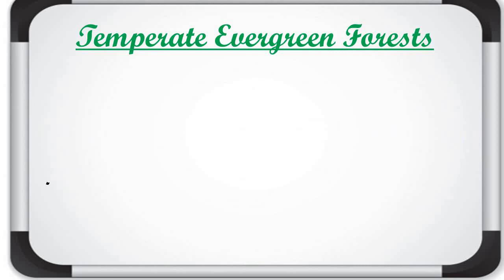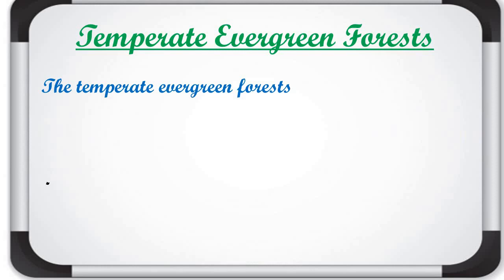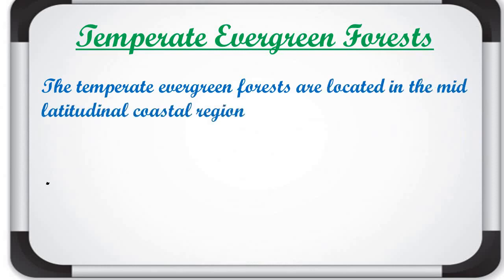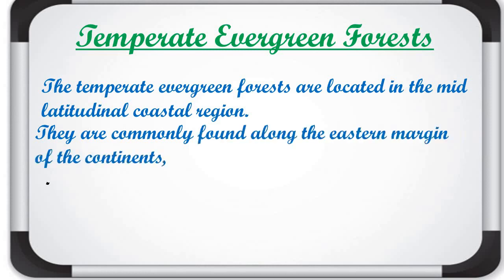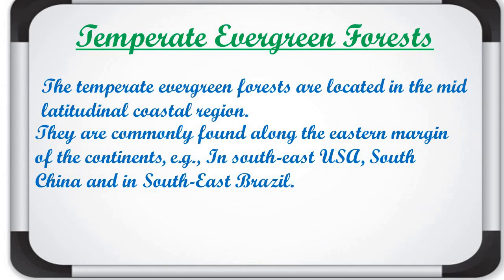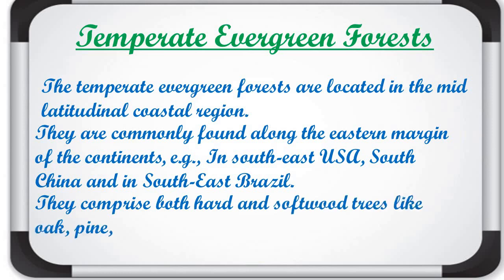Next are temperate evergreen forests, found in the temperate zone — the area between the Tropic of Cancer and Arctic Circle in the northern hemisphere, and between the Tropic of Capricorn and Antarctic Circle in the southern hemisphere. These forests are located in mid-latitudinal coastal regions, commonly found along the eastern margins of continents, for example in southeast USA, south China, and southeast Brazil. They comprise both hardwood and softwood trees like oak, pine, and eucalyptus.